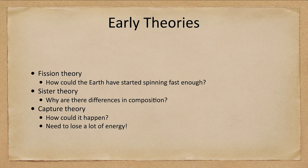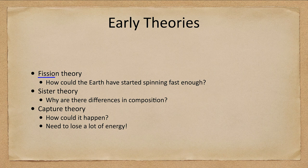Let's look at some of the early theories. The fission theory says that the Earth spun really fast and a blob of material came off at the equatorial region and became the moon. First of all, how could the Earth have started spinning fast enough? That is a very good question.